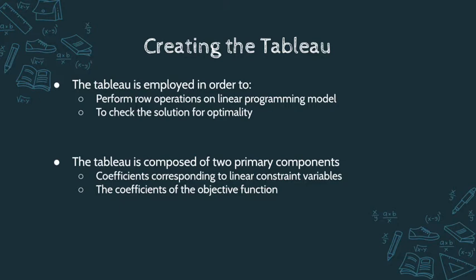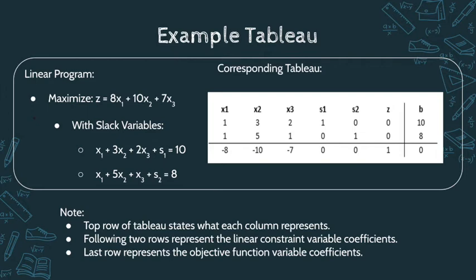The tableau is composed of two primary components: the coefficients corresponding to the linear constraint variables, and the coefficients of the objective function. For example, we are given a linear program to maximize the function z equals 8x1 plus 10x2 plus 7x3, with two equations incorporating the slack variables.